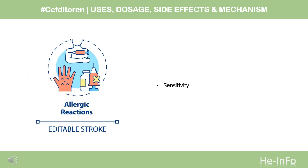What is ceftatorin used for? For the treatment of mild to moderate infections in adults and adolescents 12 years of age or older, which are caused by susceptible strains of microorganisms in acute bacterial exacerbation of chronic bronchitis, community-acquired pneumonia, pharyngitis/tonsillitis, and uncomplicated skin and skin structure infections.